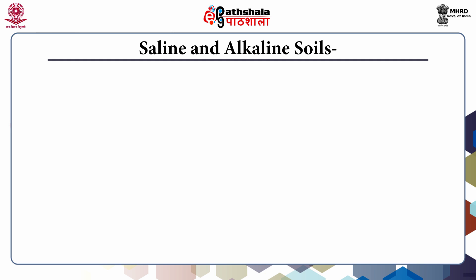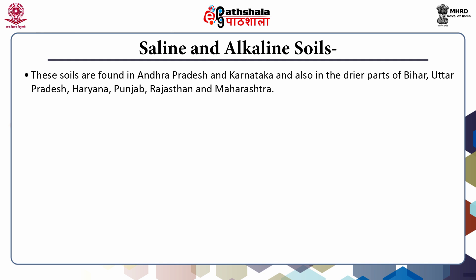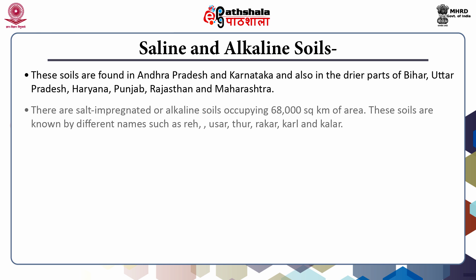Next, alkaline and saline soils. These are found in Andhra Pradesh and Karnataka, in the drier parts of Bihar, Uttar Pradesh, Haryana, Punjab, Rajasthan and Maharashtra. These are salt-impregnated or alkaline soils occupying 68,000 square kilometers of area. These soils are liable to saline and alkaline efflorescences and are known by different names such as Reh, Usar, Thar, Rakar, Kala, etc.